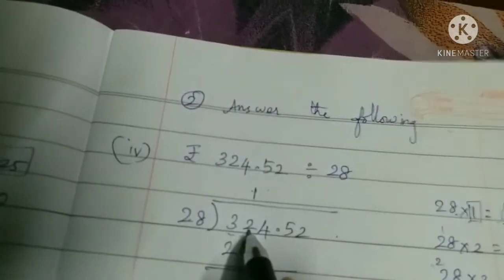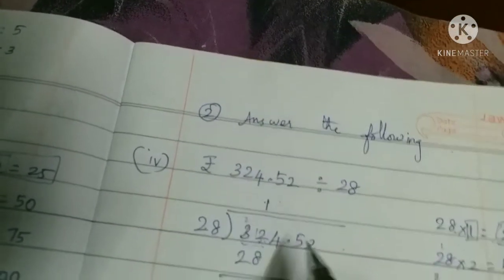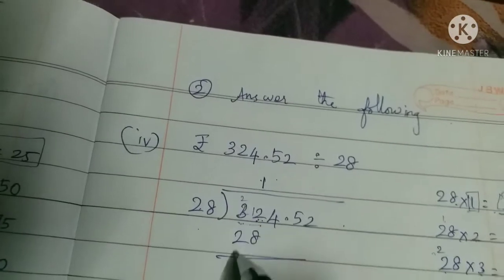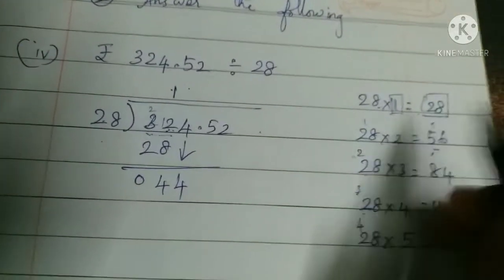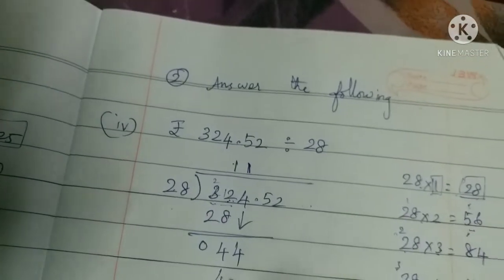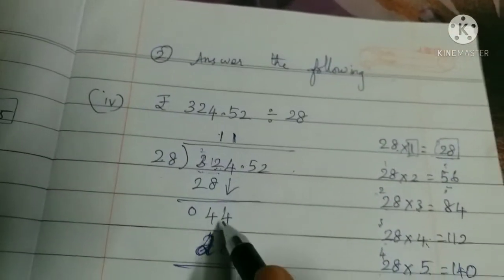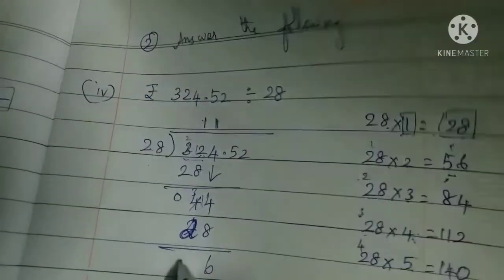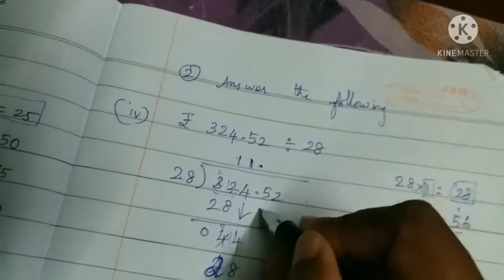Now subtract. We have 2 here, so we need to borrow — it becomes 12. And the next digit becomes 2. 12 minus 8 is 4, and 2 minus 2 is 0. So we get 4. Now bring down the next digit to get 44. 28 goes into 44 once more — take 28. When we subtract, we get the remainder.